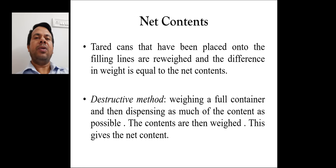Next is net content. Two methods are there. In first method, tared cans that have been placed onto the filling line are reweighed and then difference in weight is equal to the net contents. In second method, which is also known as the destructive method, weighing a full container and then dispensing as much of the content as possible, then the contents are weighed. This gives the net content.